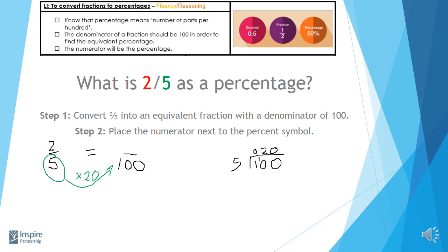Now, remember, whatever you do to your denominator, you must also do to your numerator. So this one, my two, I also need to multiply by 20. Two times 20, I know, is 40.